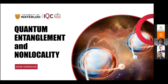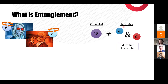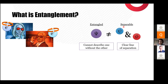Whenever we talk about entanglement, we're always talking about multiple quantum systems. Say Alice and Bob each have a quantum object — could be electrons, photons, mix and match — two quantum objects we can encode qubits into. Normally, we'd say those two qubits are separable: I can think about Alice's qubit independently of Bob's. But entangled states are those where I cannot describe one without the other. When I have an entangled pair of qubits, I can't describe one without also describing the other.